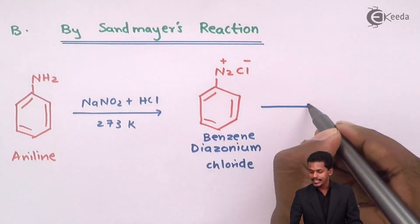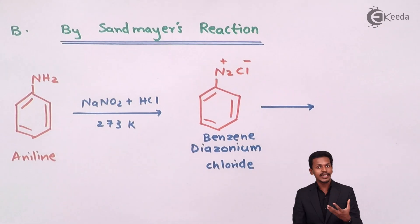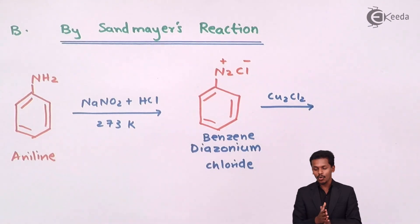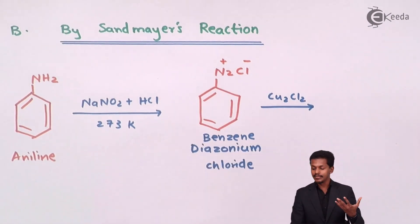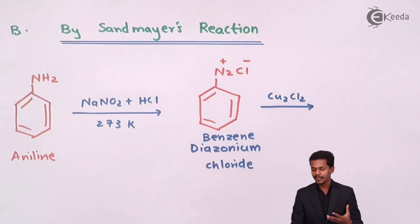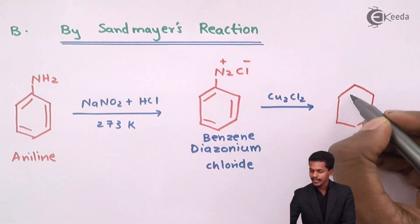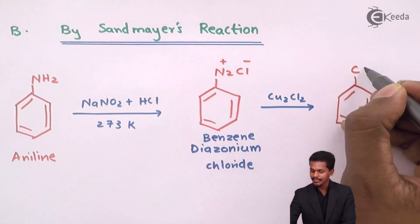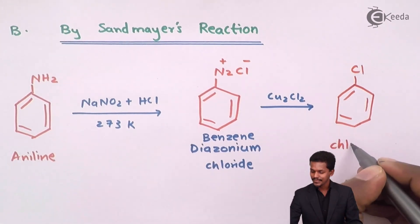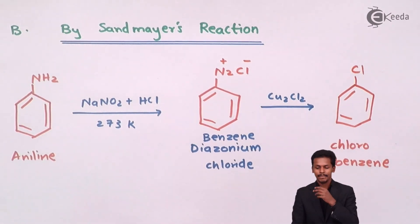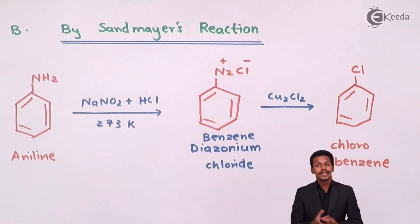Since benzene diazonium chloride is very unstable, we treat it in the presence of cuprous chloride (CuCl₂). The N₂ group is released as nitrogen gas due to its instability, and the product obtained is chlorobenzene.